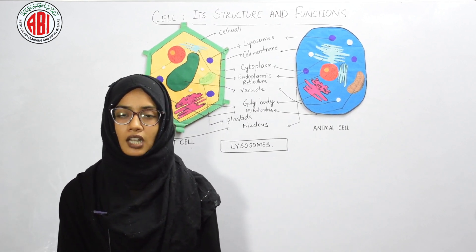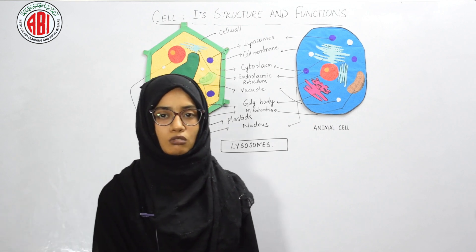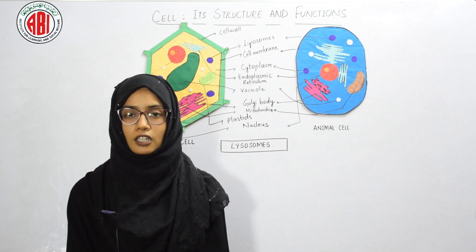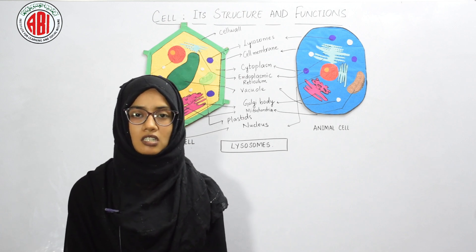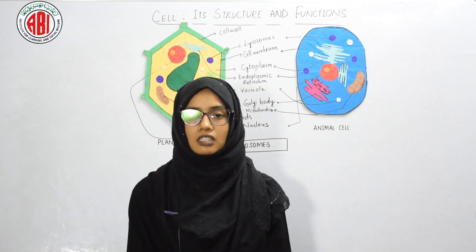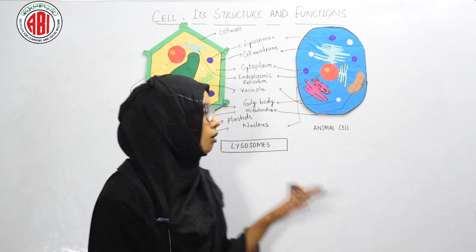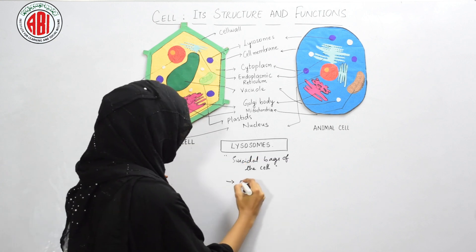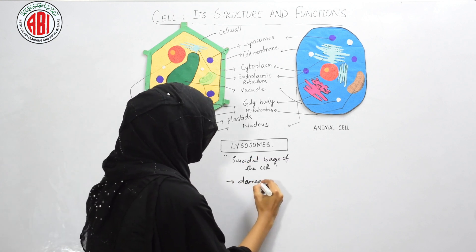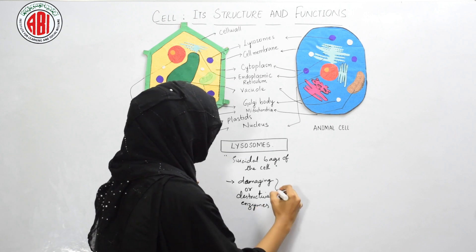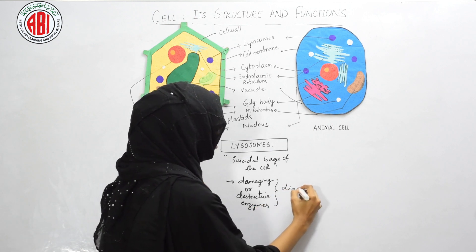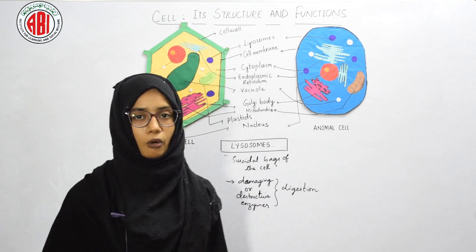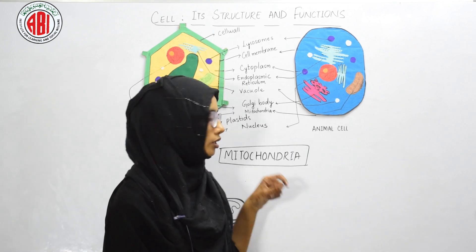Lysosomes play an important role when a cell gets damaged or needs to be digested — the cell gets digested by the lysosome. Therefore, they are also called the suicidal bags of the cell. They contain destructive enzymes that help in digesting materials transported by other cell organelles.